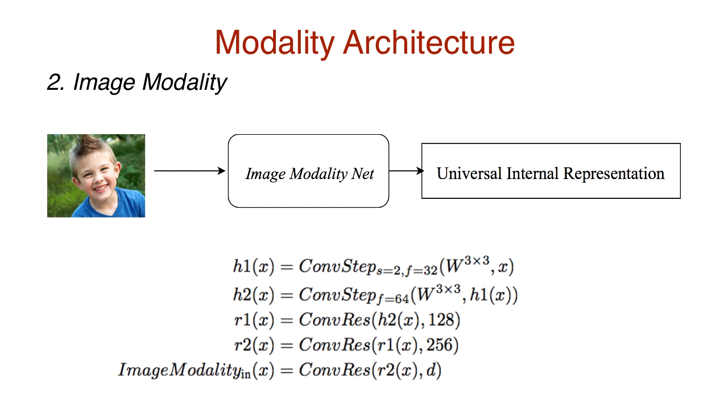This gives rise to a feature column depth. In the case of an image, we only need to convert the input into a universal internal representation. The output is usually not an image, but more of a category, and hence we don't require an image modality out unit.